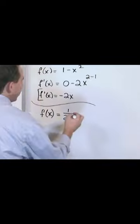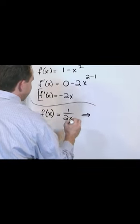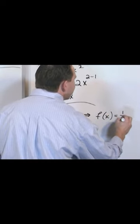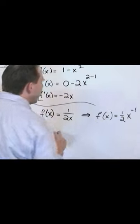Every time I see something like this, I always do the following thing because it helps me. I rewrite the function. I rewrite it as 1 half times x to the negative 1 power.